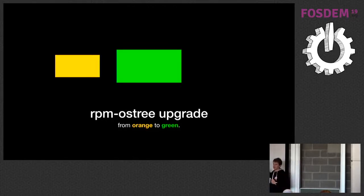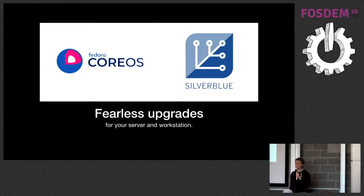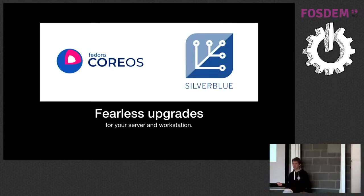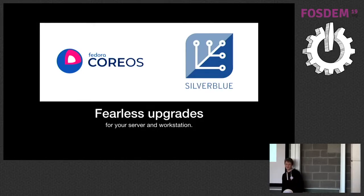This enables fearless upgrades — even from Fedora 28 to Fedora 29. If something breaks, you can go back. Someone asked what happened to Project Atomic: CoreOS and Silverblue are essentially the next generation. When Red Hat acquired CoreOS, they took the best from both worlds — rpm-ostree from Atomic, and CoreOS's brand and automation technology.